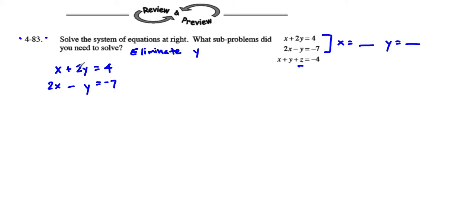So I'm going to take this here. Right now I have a 2y and a negative y. In order to eliminate them, I'm going to need to turn this into a negative 2y. So I'm going to have to multiply my bottom equation by 2 on each side. What I get there is 2 times 2x would give me 4x. 2 times negative y gives me that negative 2y that I'm looking for. 2 times negative 7 gives me negative 14.